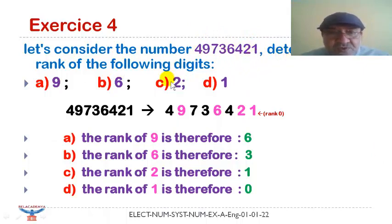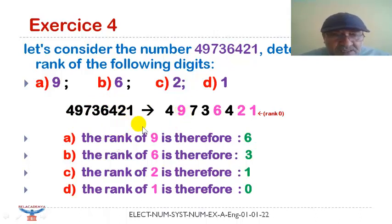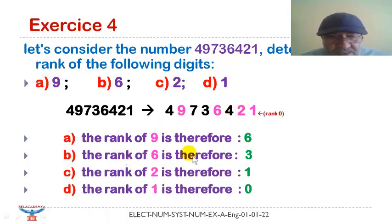We have to consider the following number and search for the rank of some digits: nine, six, two, and one. We have colored the concerned digits. Counting from rank zero: for nine the rank is six, for six the rank is three, for two the rank is one, and for one the rank is zero.